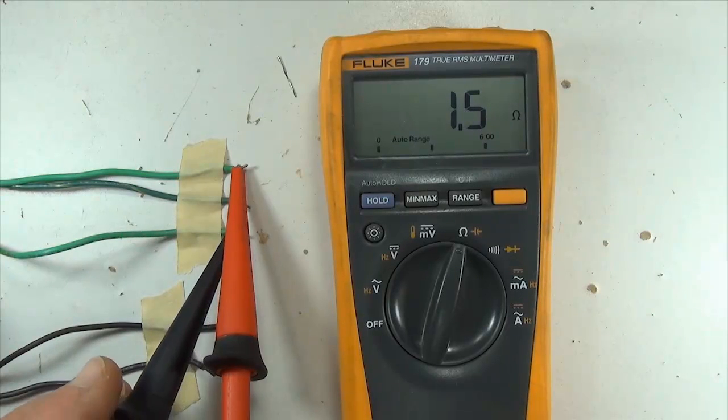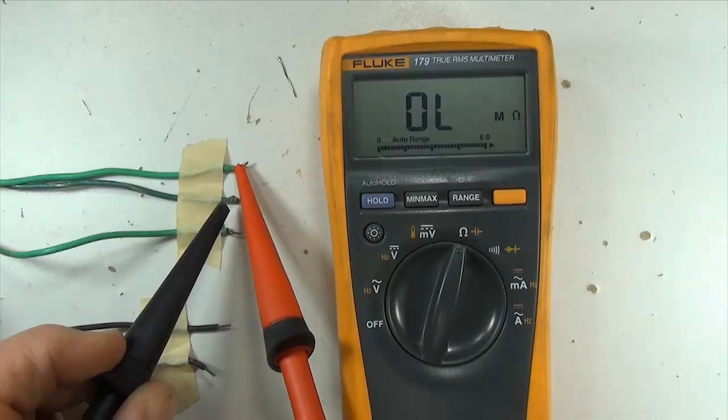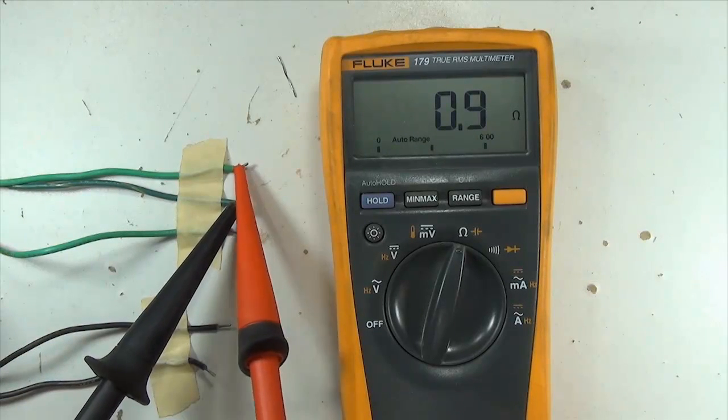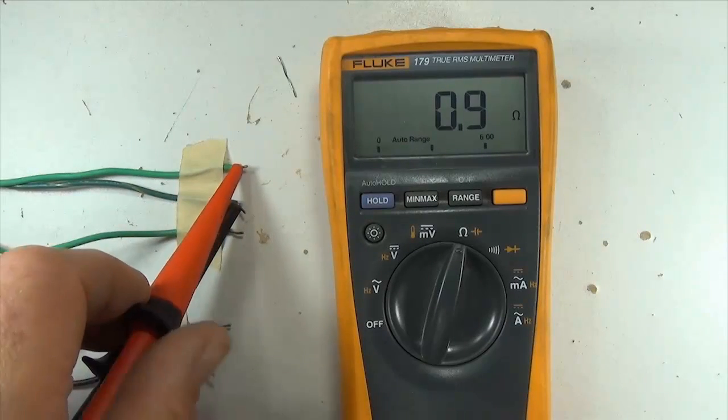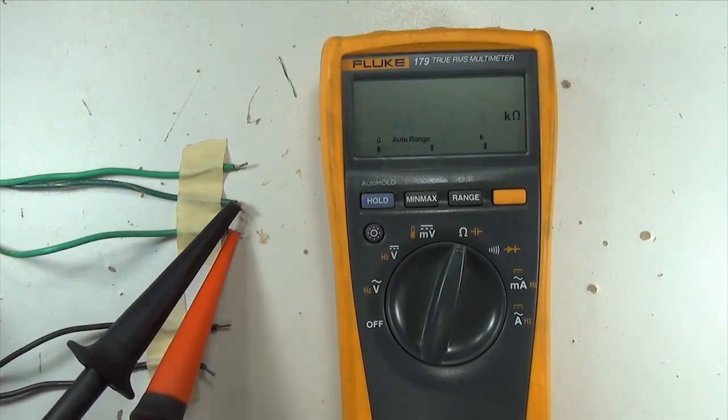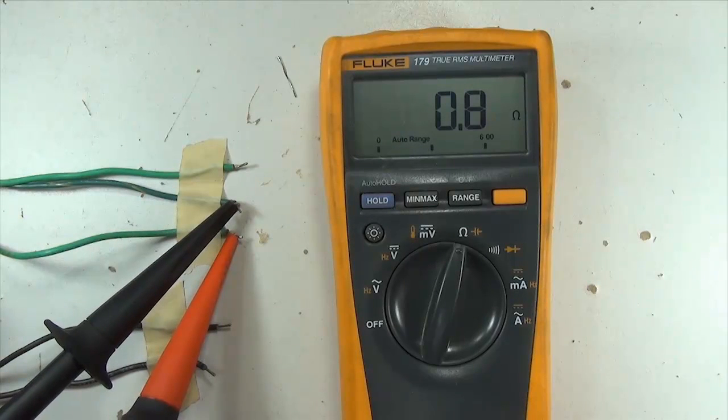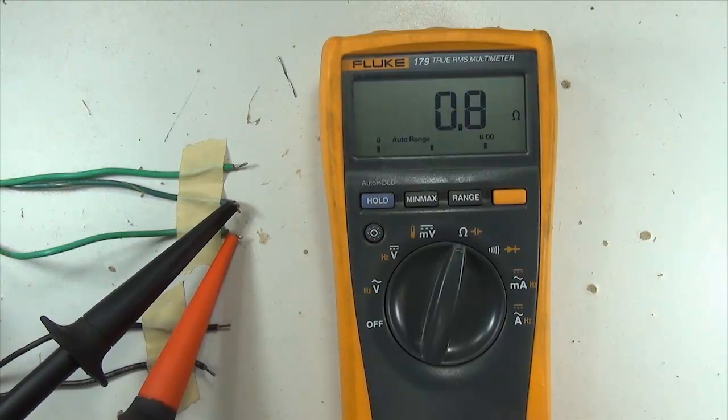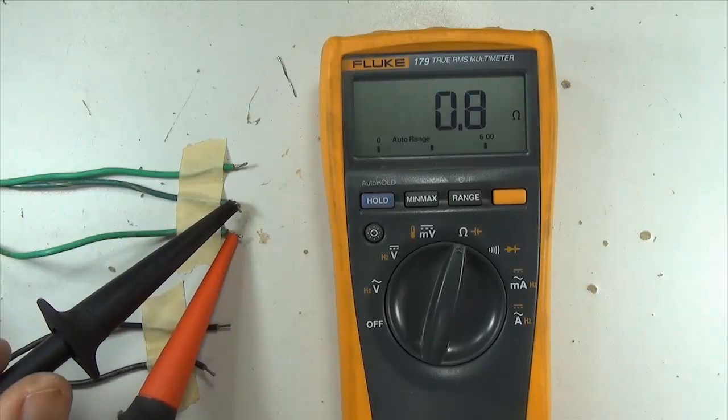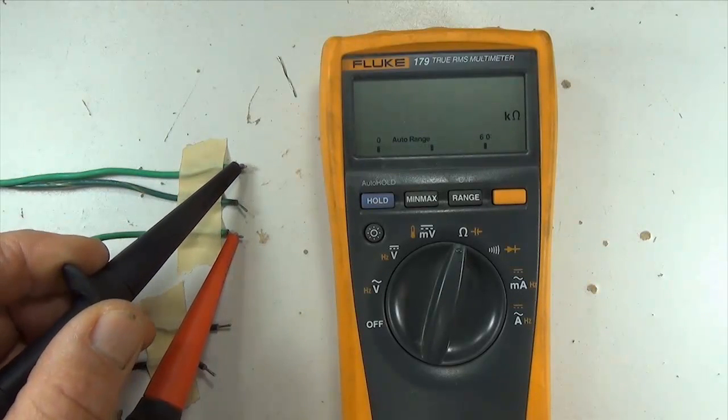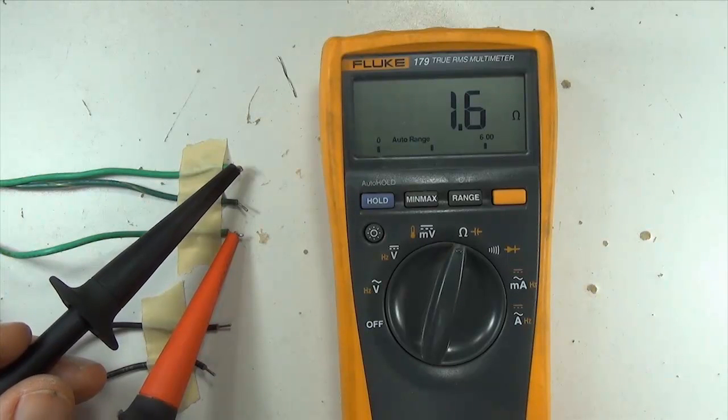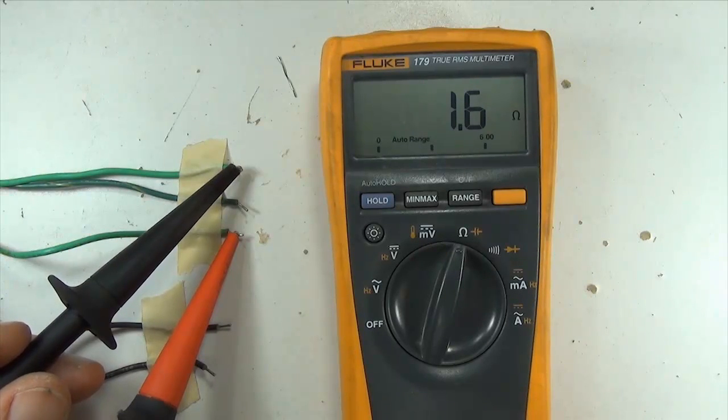Now let's measure the resistance from the center tap to one of the outside winding wires. Here I'm getting about 0.9 ohms. And then on this side, 0.8 ohms. So we add those two resistances together, we are getting about 1.6 ohms. What did we get when we went across the entire thing? 1.6 ohms. So we know that the secondary winding is in good working order.